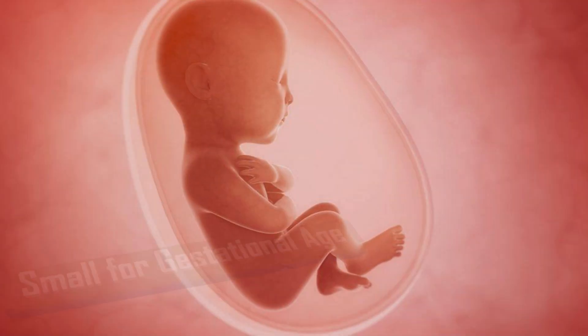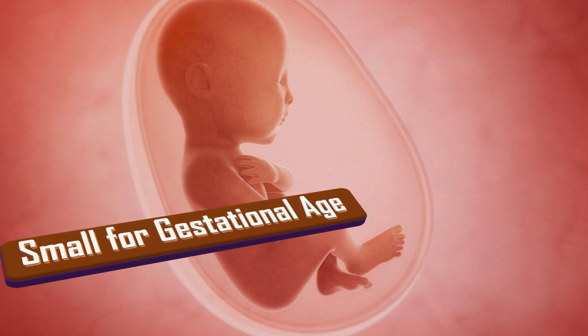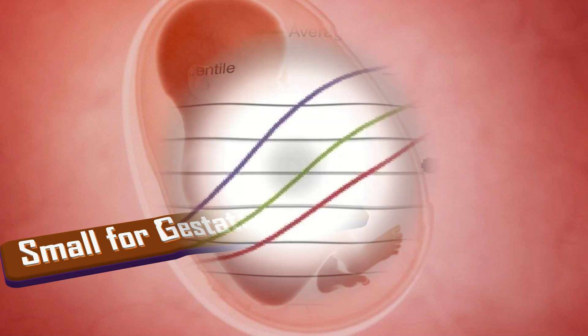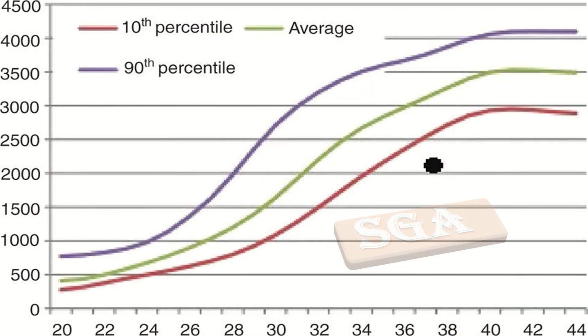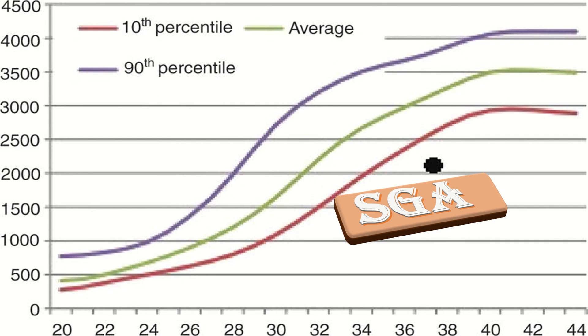A fetus is considered small for gestational age when the individual biometric measurements or a combination of measurements used to estimate fetal weight falls below the set parameters, requiring accurate assessment of gestational age. Commonly, the definition of SGA refers to a fetus with a predicted weight or an abdominal circumference measurement less than the 10th centile.